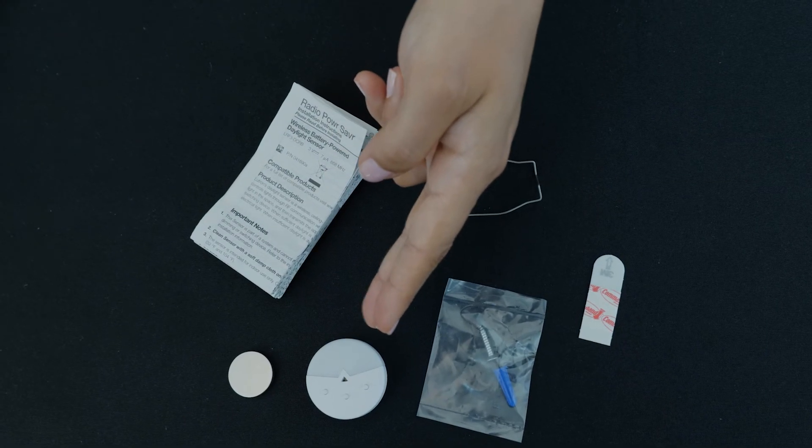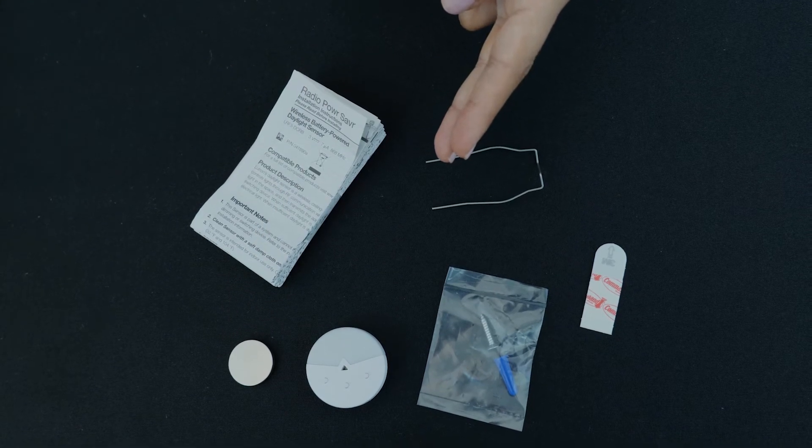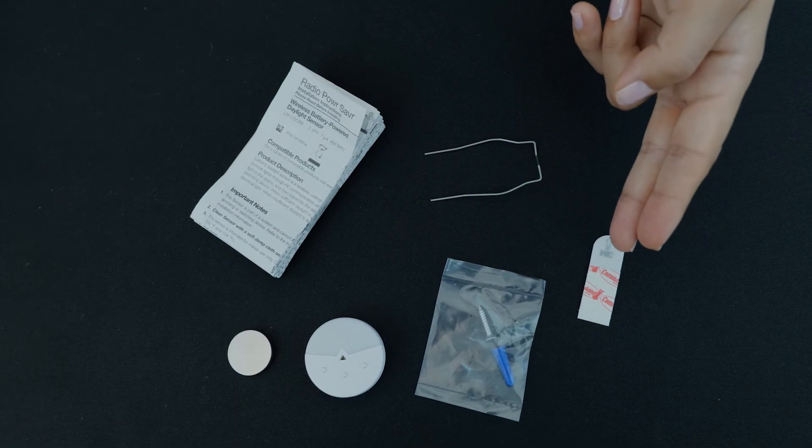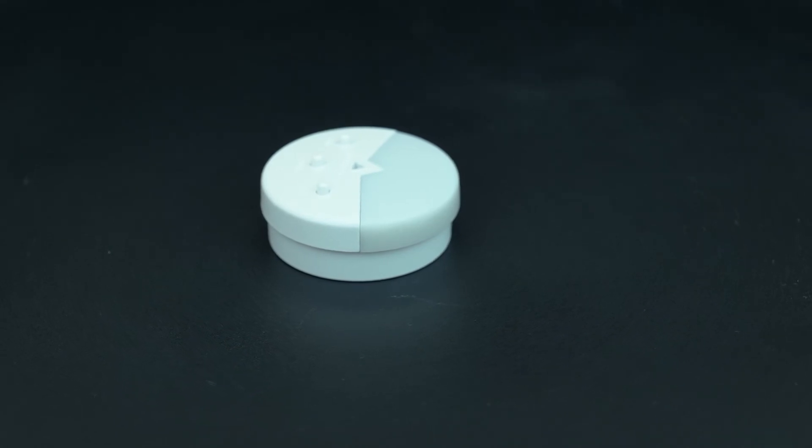Inside, you'll find the sensor, a battery to power it, a mounting wire for dropped ceilings, a screw and anchor for solid ceilings, a temporary mounting adhesive strip, and an instruction manual. This is what the daylight sensor looks like after unboxing. Front accessible test buttons make setup easy.